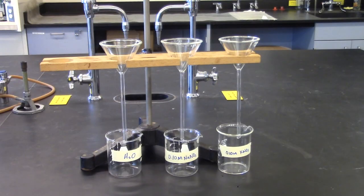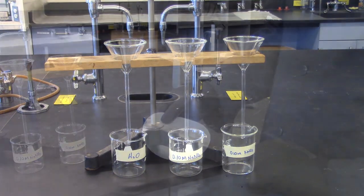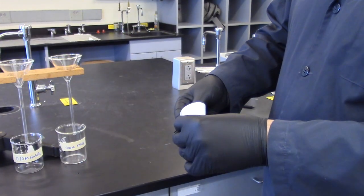While the excess potassium acid tartrate settles to the bottom of the flask, we will set up three funnels for filtration, collecting the filtrate into labeled beakers. Fold filter paper to put in funnel.